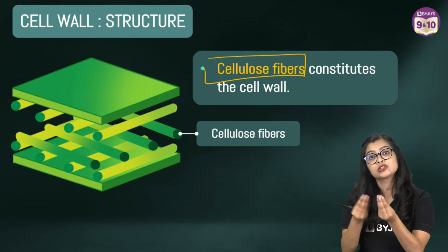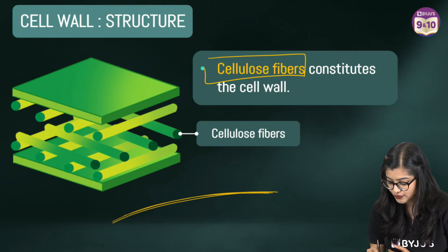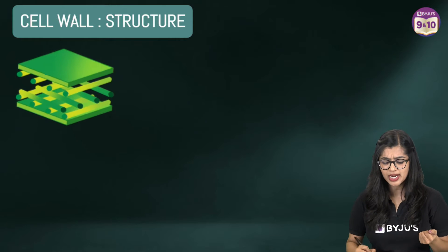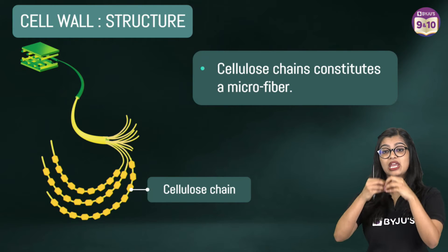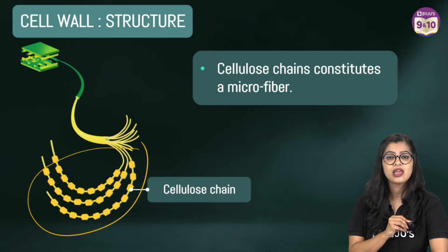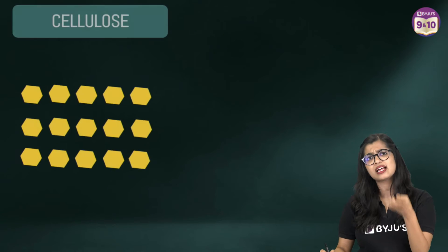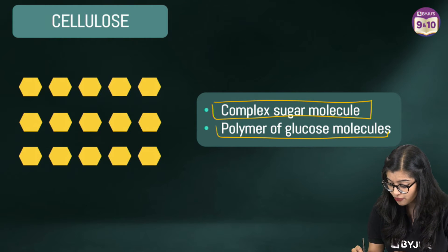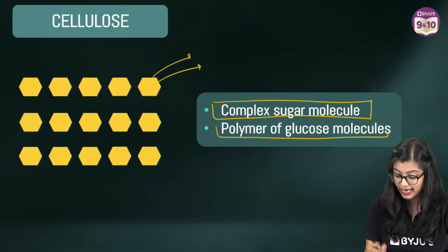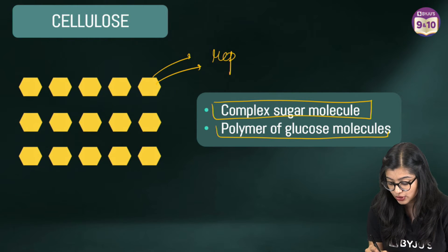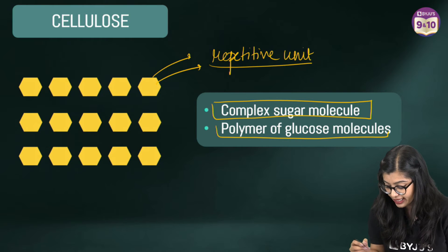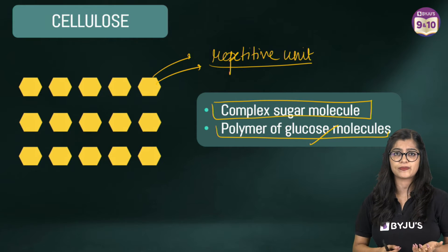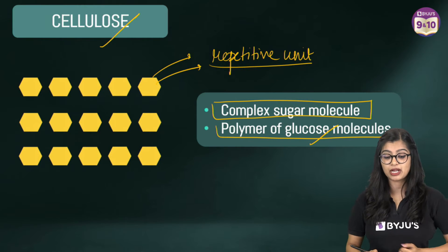What do we mean by cellulose fibers? Cellulose fibers are nothing but long threads of cellulose. If we go into the details and pull it out thread by thread, we see that it constitutes a chain of molecules. At the end of the day, cellulose is nothing but a type of carbohydrate — a complex sugar molecule which is a polymer of glucose molecules. That means cellulose is made of repetitive units of sugar molecules, specifically glucose molecules arranged in a certain manner. So in the case of plant cells, the cell wall is made up of cellulose.